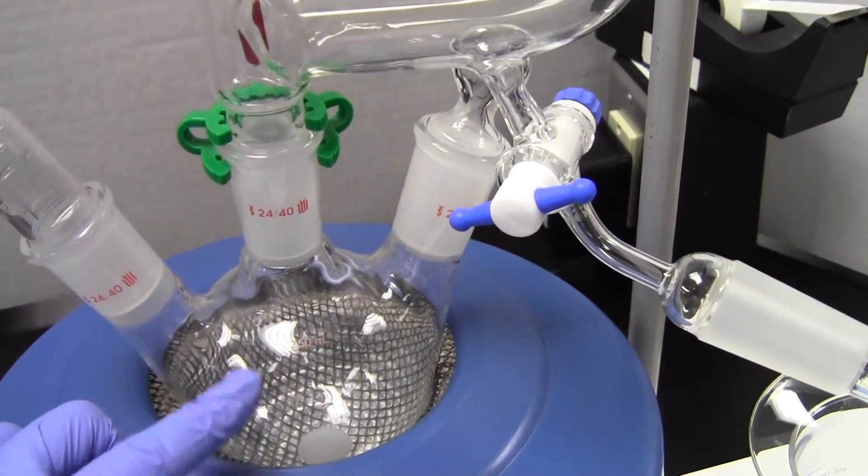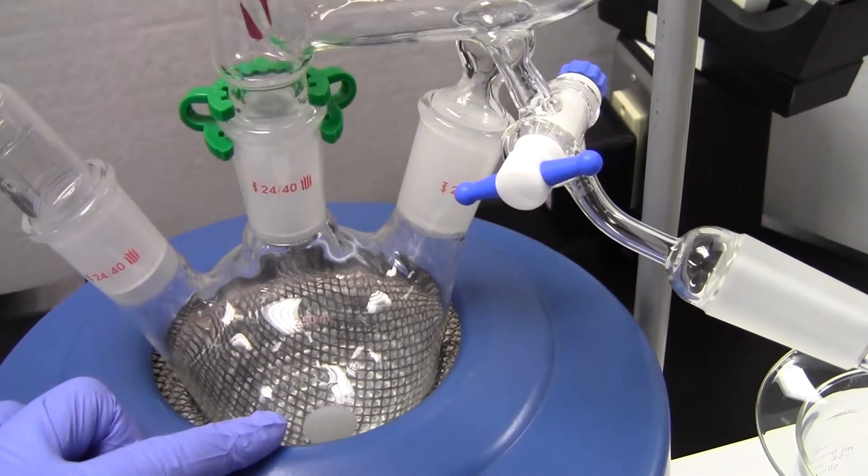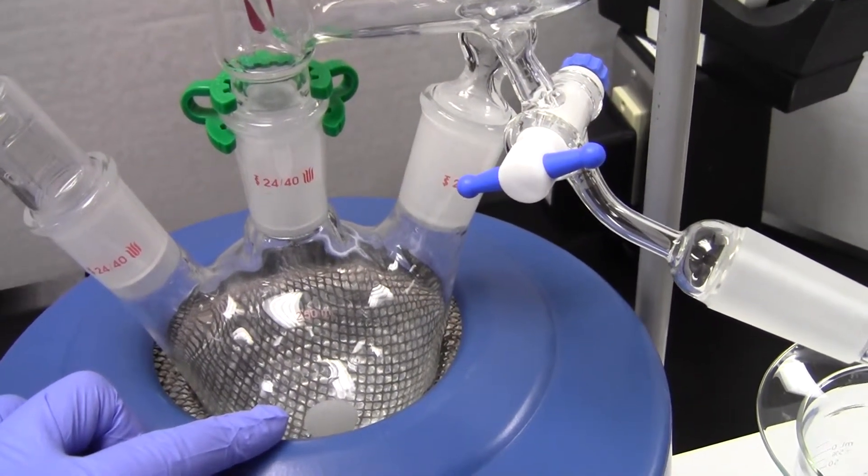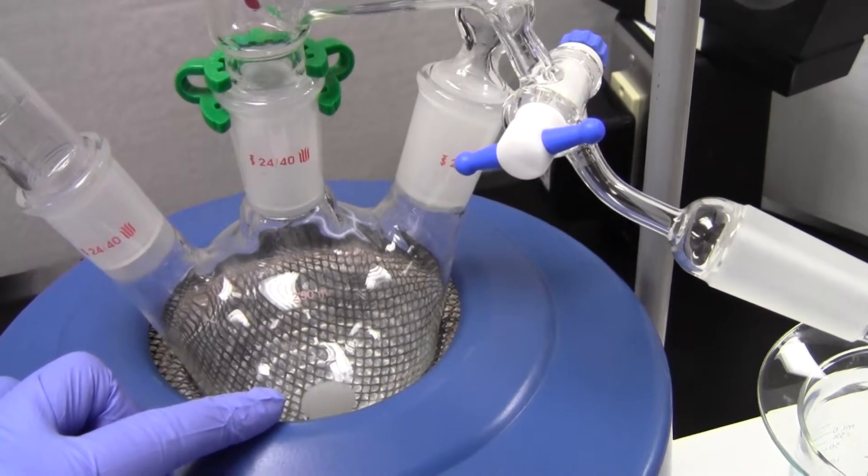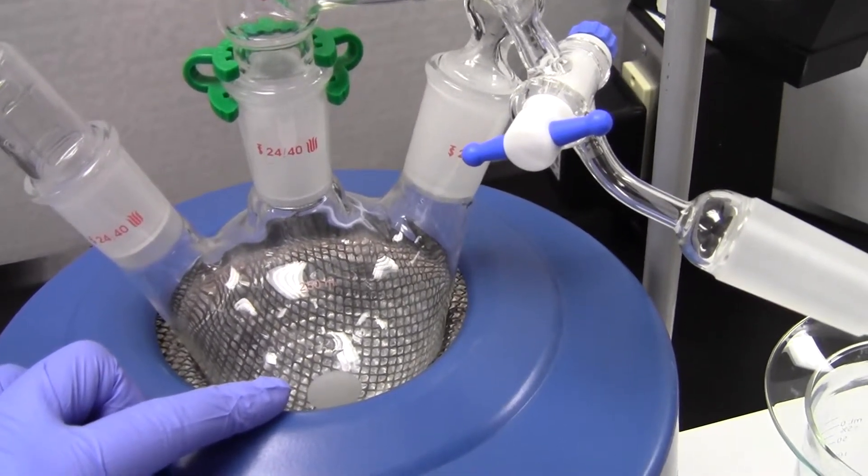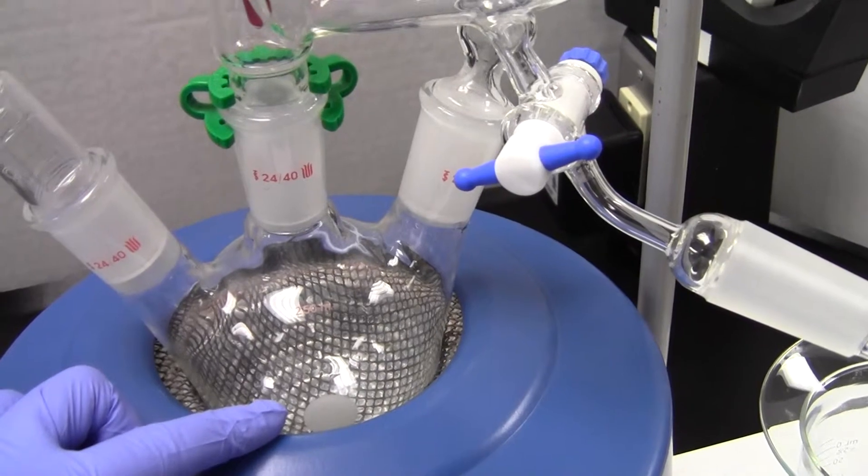It should stop boiling when you add the cold cyclohexane, then it'll re-establish. You want to aim for your temperature to drop by a degree or two, but not more than that, so make some careful additions.